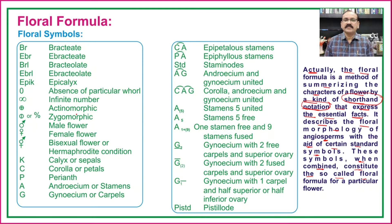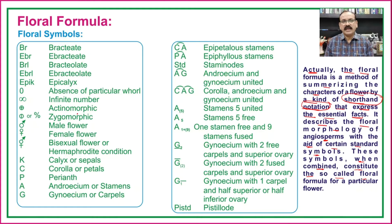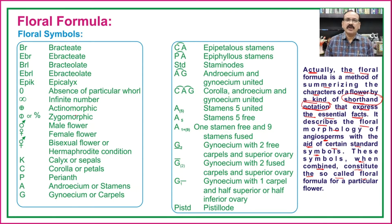There is a difference between the floral formula of a particular plant or species and the floral formula of a particular family, because when writing for the family it contains many genera and hence there are many variations. But when writing the floral formula for a particular species, it remains fixed. First, we will see the different symbols or symbolic notations which are useful in writing the floral formulae.